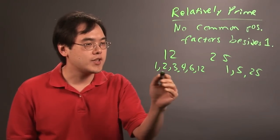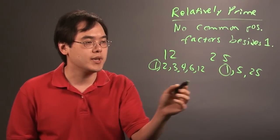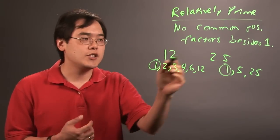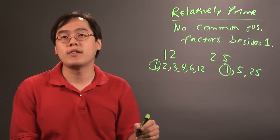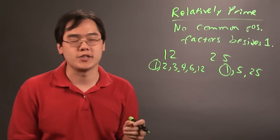Now, the only factors that they have in common is going to be 1 because they don't share anything else. That makes these two numbers relatively prime. That fits the definition because they don't have any common positive factors besides the number 1 itself.